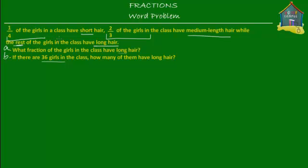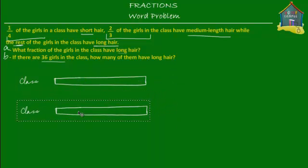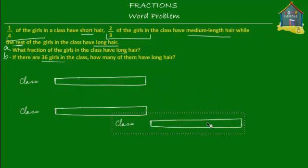One fourth of the girls in the class have short hair. Let's put a model here for the whole class of girls. This represents one whole class of girls. I'm going to copy this block a few times because I need it to mark one fourth, two thirds, and later find the rest. So I'm going to copy it three times.